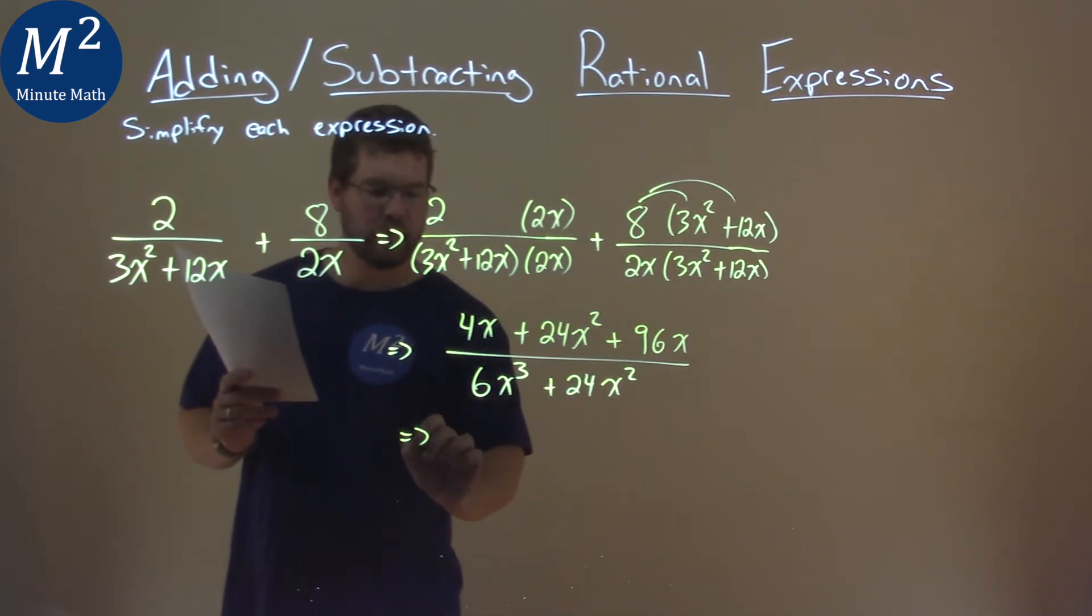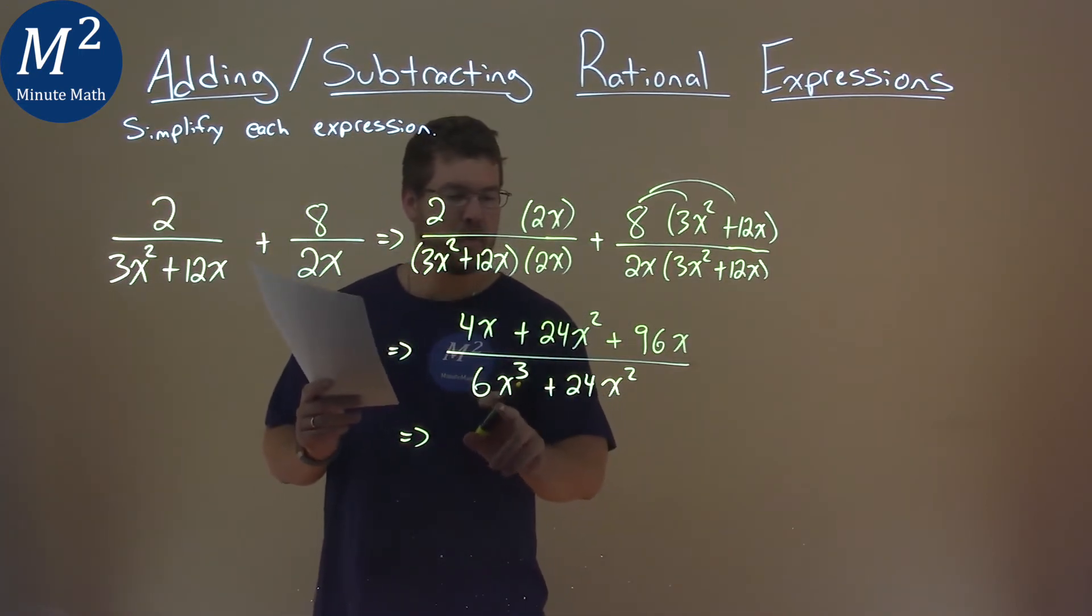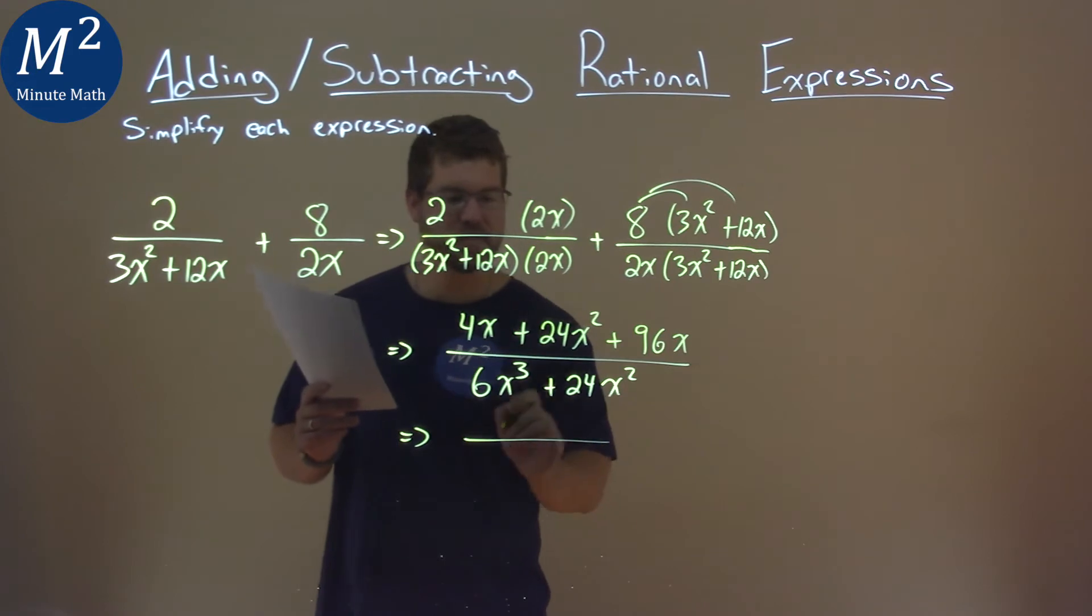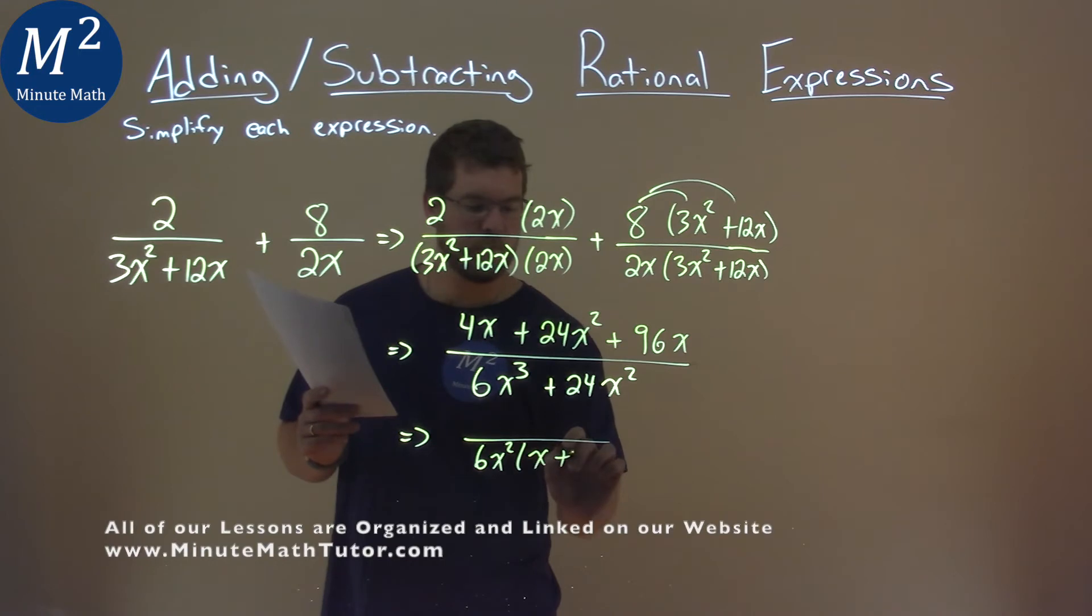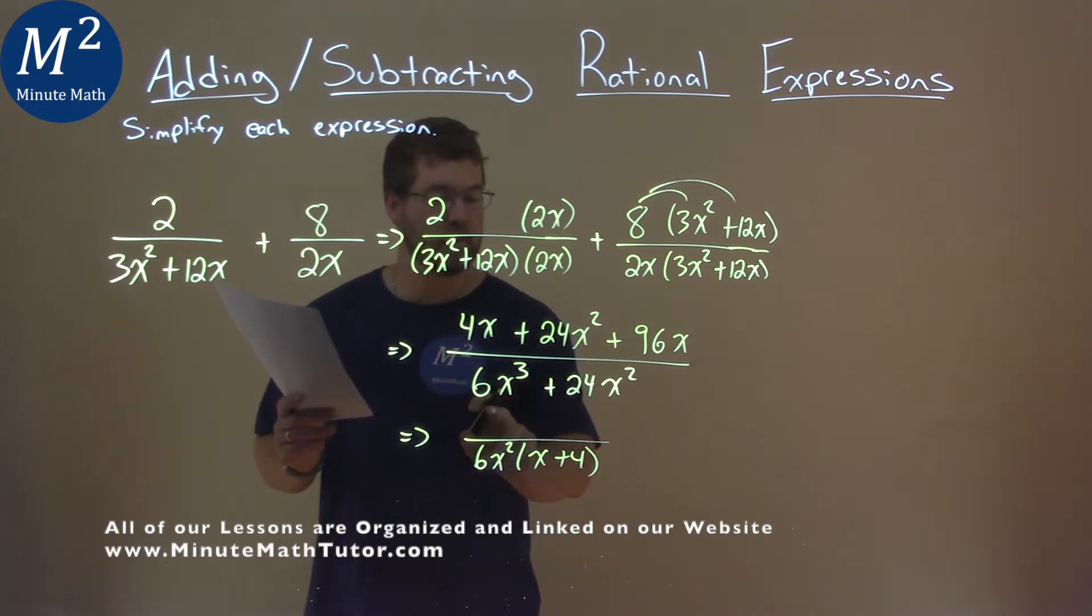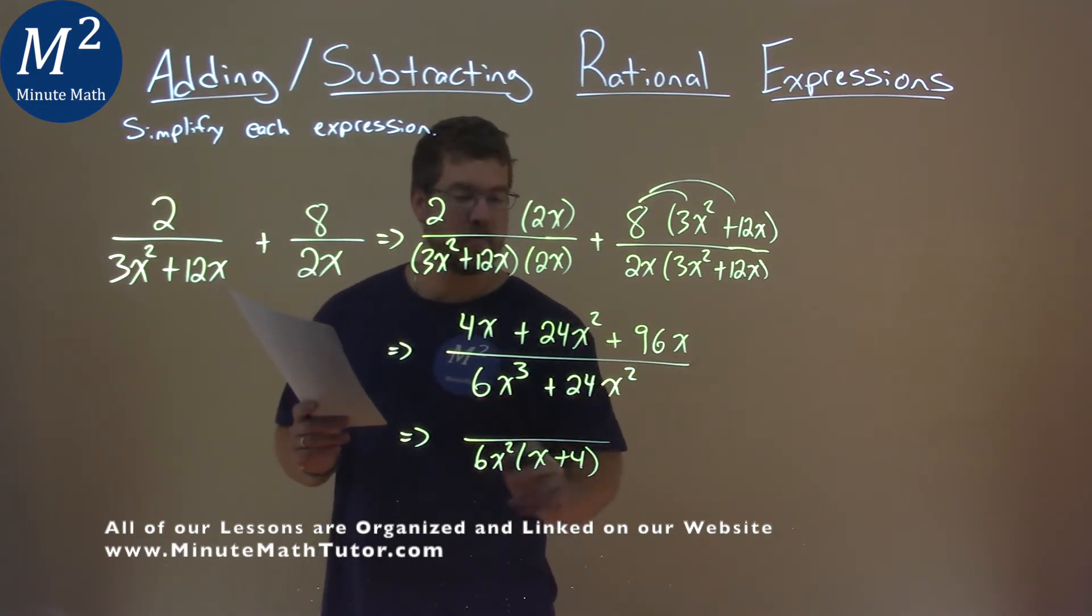Keep on going, we're going to be simplifying here. Our denominator, we can pull out a 6x squared, and we're left with x plus 4. So if I pull out 6x squared, I get x plus 4 in the denominator.